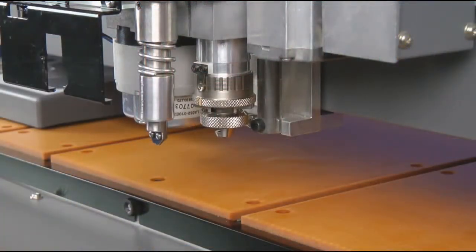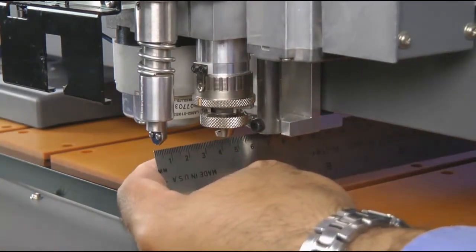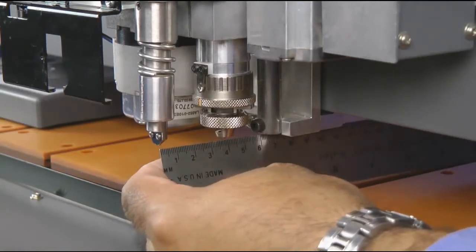Using a ruler, you want to measure from the center of the raster pin to the center of the spindle.